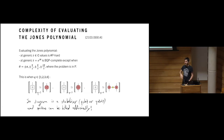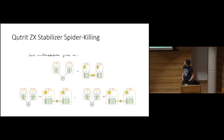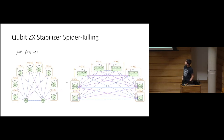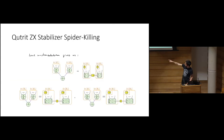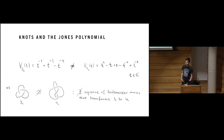To summarise: the main result is these rewrite rules for efficiently killing stabilizer q-trit diagrams — from local complementation rules for single spiders, and a pivot rule for pairs of spiders. Thank you.